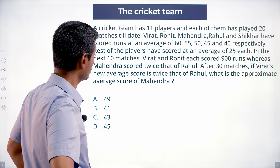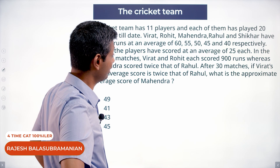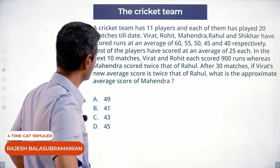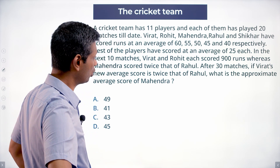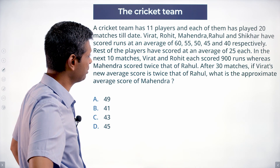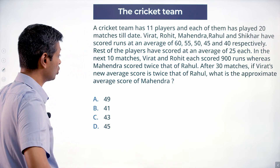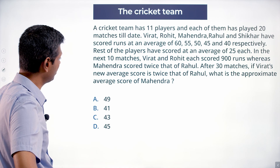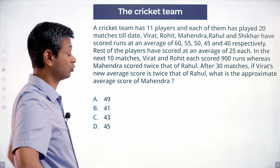In the next 10 matches, Virat and Rohit each scored 900 runs whereas Mahindra scored twice as that of Rahul. After 30 matches, if Virat's new average score is twice that of Rahul, what is the approximate average score of Mahindra?